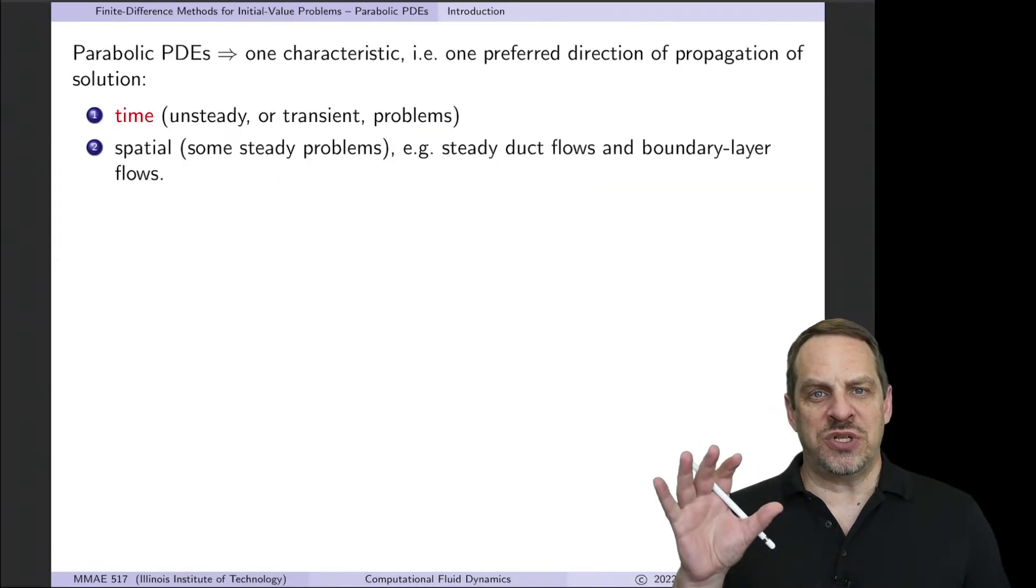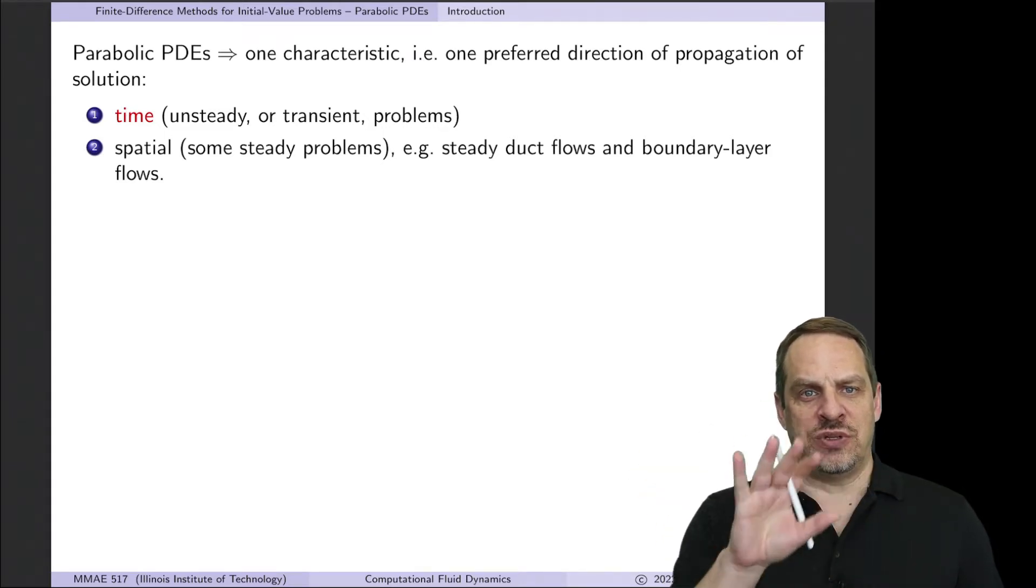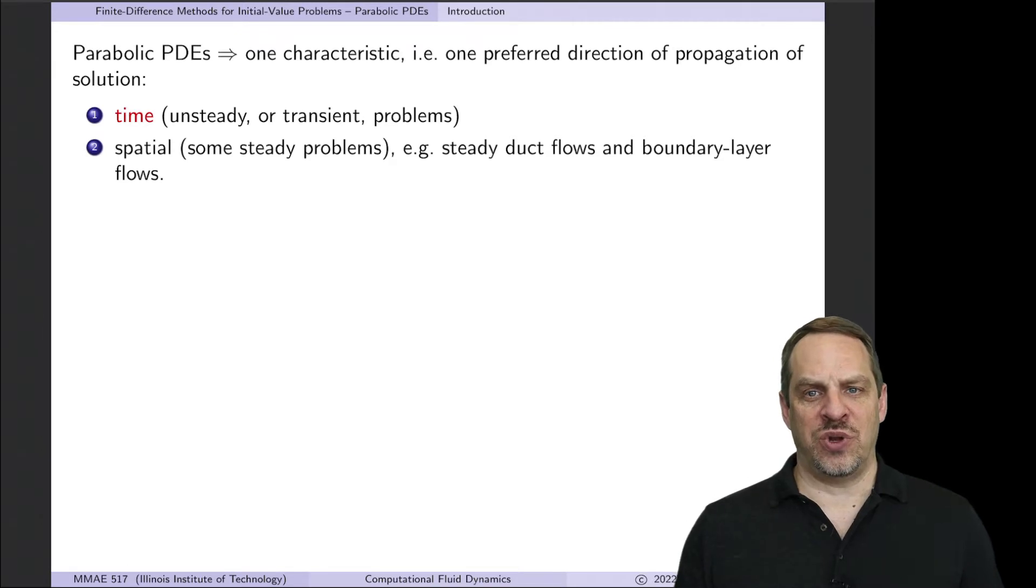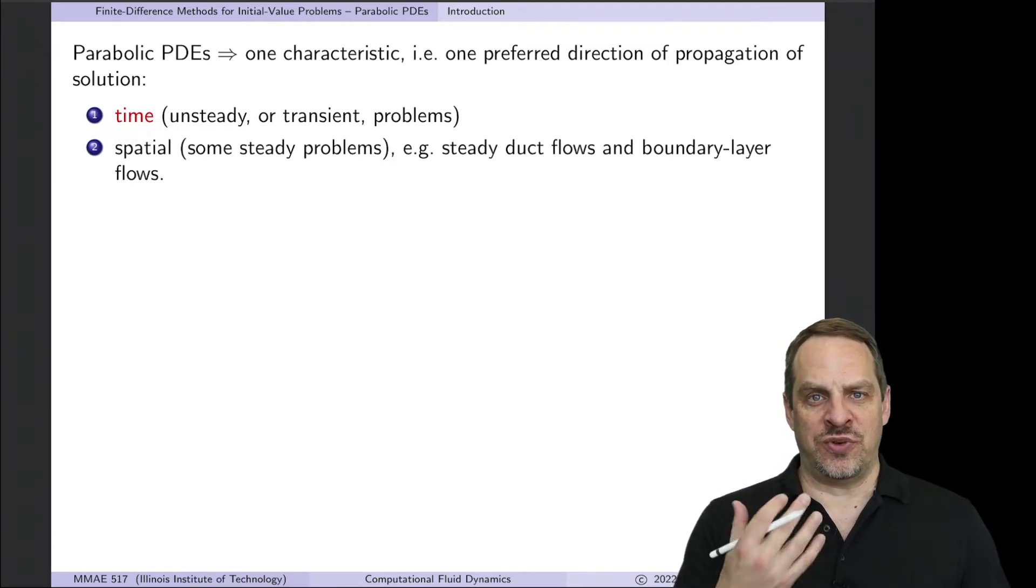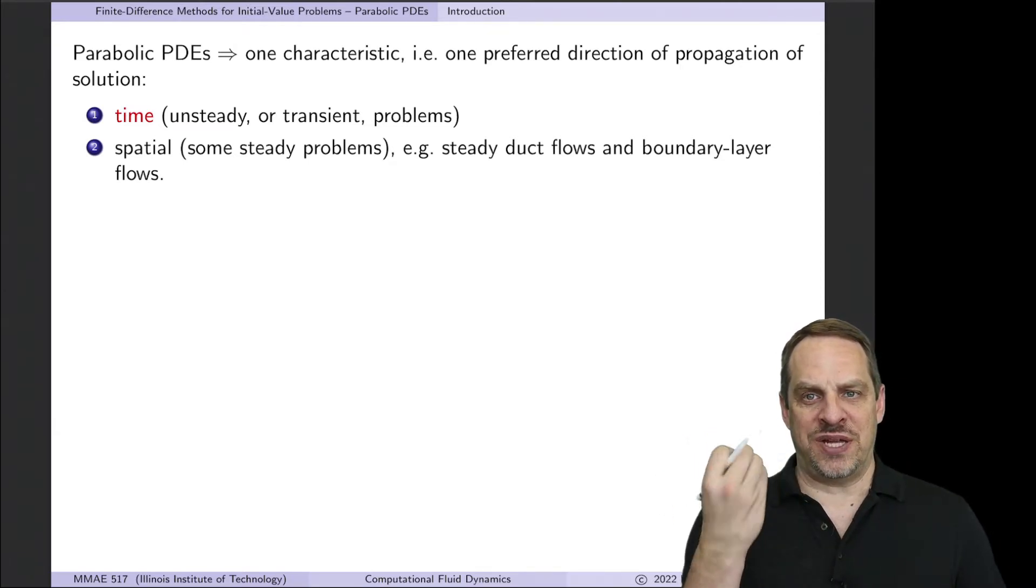So remember that elliptic equations do not have any characteristics. There's no preferred direction of propagation of solutions. So the solution everywhere affects the solution anywhere instantaneously. As we discussed in an earlier video, for parabolic PDEs, we now have one characteristic. So there's one preferred direction of propagation of the solution, and normally that's time. So in an unsteady or transient phenomenon, there's a preferred direction of propagation of the solution, and that's time. That's going to be the way we're going to imagine this in all the cases we'll deal with in this chapter.